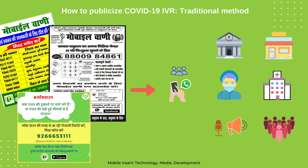You can distribute or stick pamphlets and posters at prime locations to publicize the COVID IVR number. Create a poster and share across social media platforms and WhatsApp groups. You can stick the pamphlets at PDS shops, Kirana stores, chemist shops, clinics, health centers, district hospitals, Panchayat Bhavan, quarantine centers, COVID-19 relief camps, bank branches and so on. Maintain social distancing while distributing pamphlets.